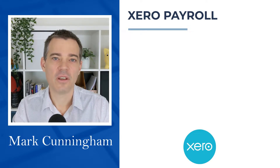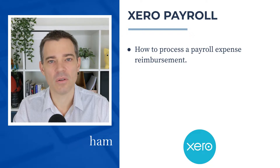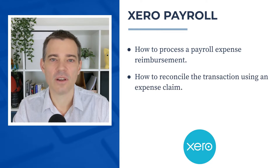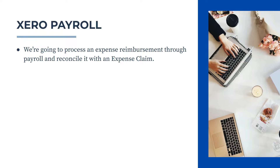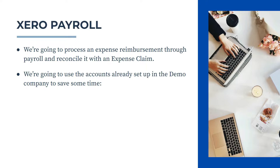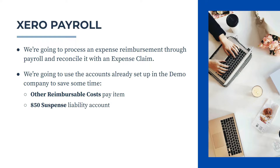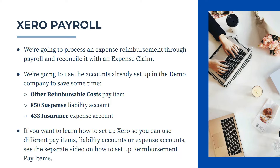Hello, Mark Cunningham here. In this video we're going to learn how to process a payroll expense reimbursement and then how to reconcile the transaction in our accounts using an expense claim. We're going to process an expense reimbursement through payroll first, and then reconcile it with an expense claim that the employee would have put in the system. We'll use accounts already set up in the demo company to save time — the 'Other Reimbursable Costs' pay item, the 850 suspense liability account, and the 433 insurance expense account. If you'd like to learn how to set up Xero with different pay items, liability accounts, or expense accounts, see our separate video on how to set up reimbursement pay items.